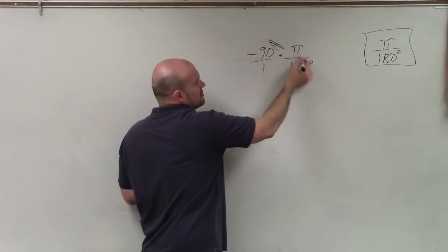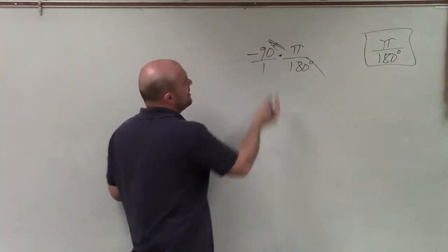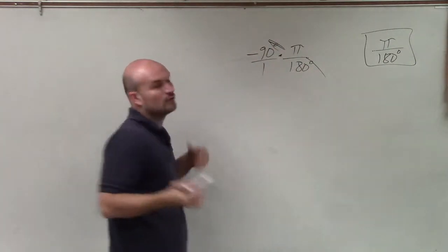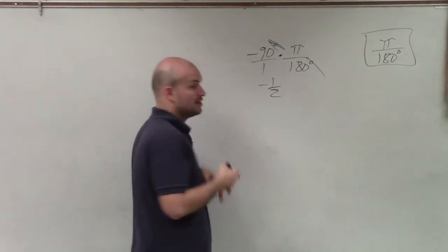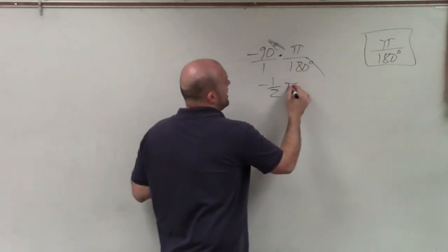Well, my degree symbols are going to divide out. And therefore, then I have negative 90 over 180, which divides into—or I'm sorry, reduces to negative 1 half times pi.